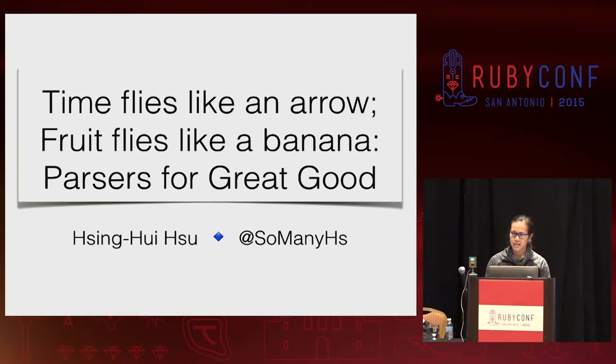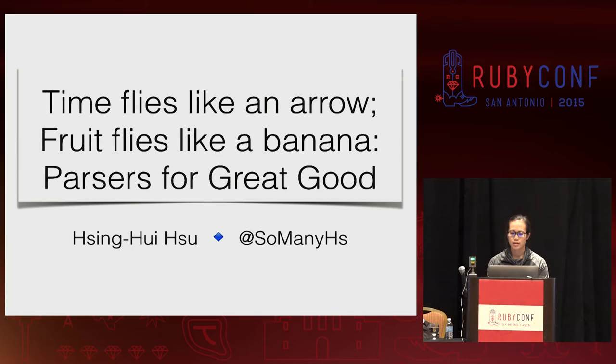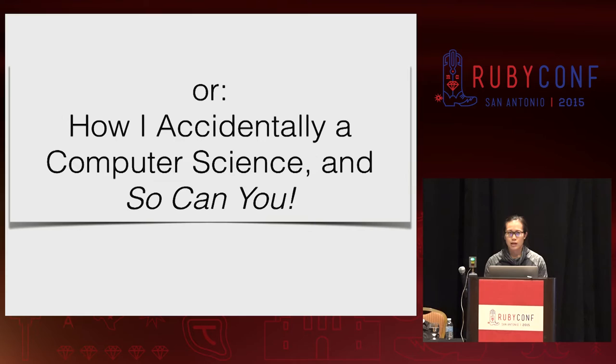A little explanation about the title of this talk. I probably first started thinking about parsing when I was teaching English as a foreign language, and I had to explain why so many words in English, like 'flies', had different meanings. Depending on which meaning the word had, the sentence can go in really different directions. When I started looking into how computer languages are parsed, I noticed there are actually a lot of similarities to the way humans parse sentences. I'm a relative newcomer to the programming world, so I never learned about parsers or compilers in school. My alt title for this talk is: how I accidentally a computer science, and so can you.